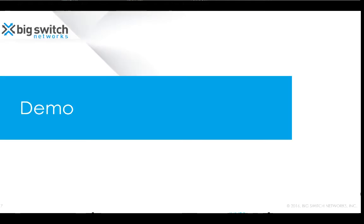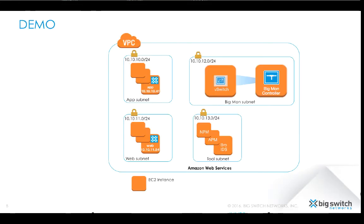We have now reached the demo part of this video. For this demo we will use a setup that is completely hosted on AWS. Both the virtual switch and the Big Monitoring Fabric controller are hosted in a big mon subnet. We also have a number of tools including the Bro IDS hosted in a separate tool subnet.